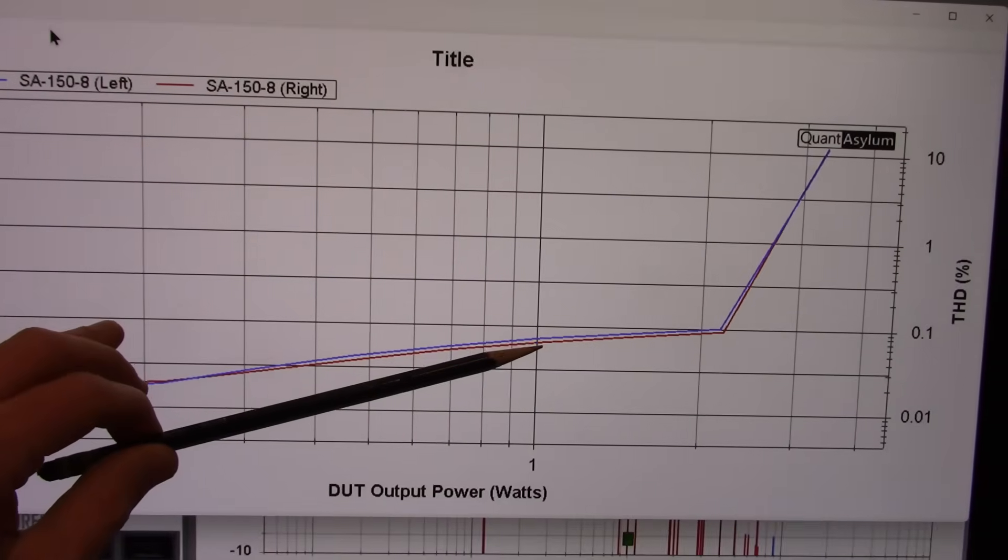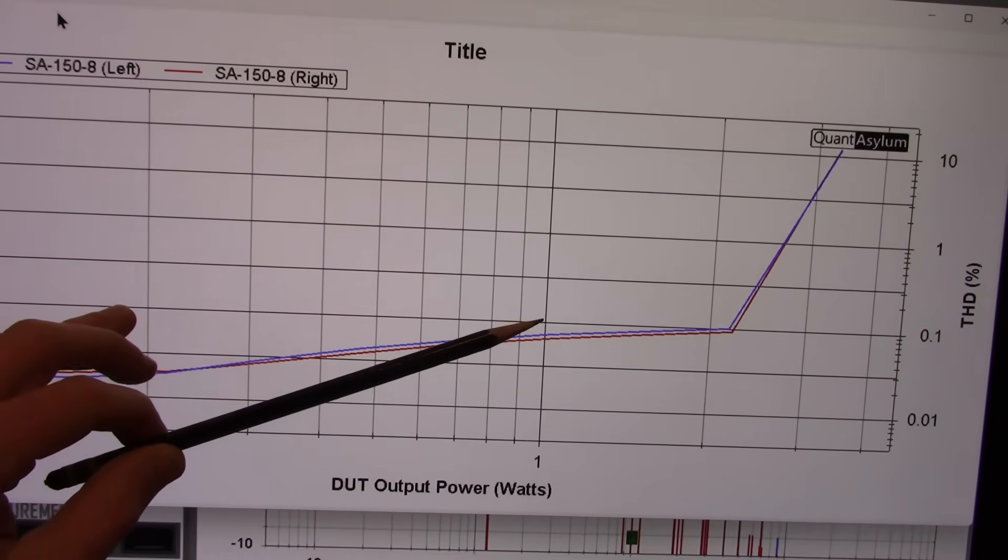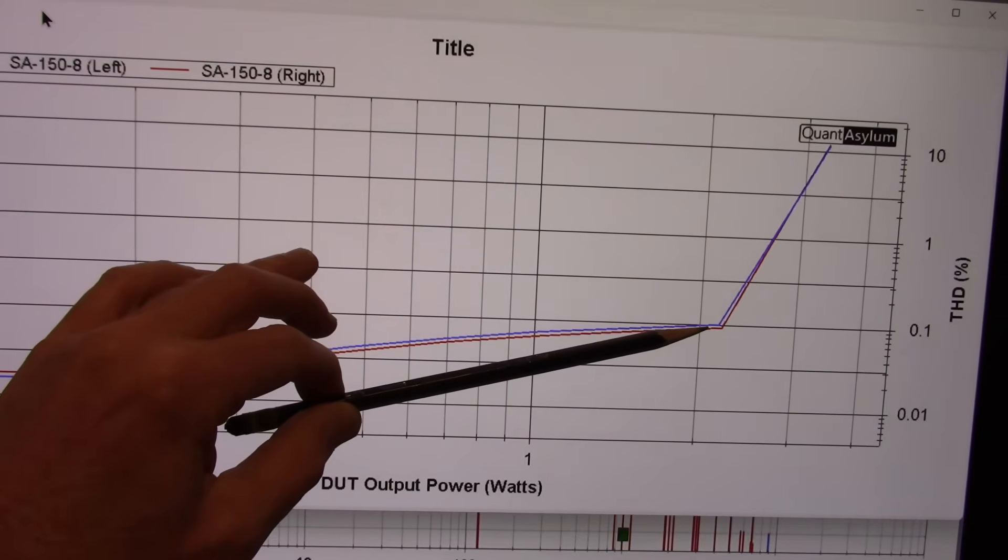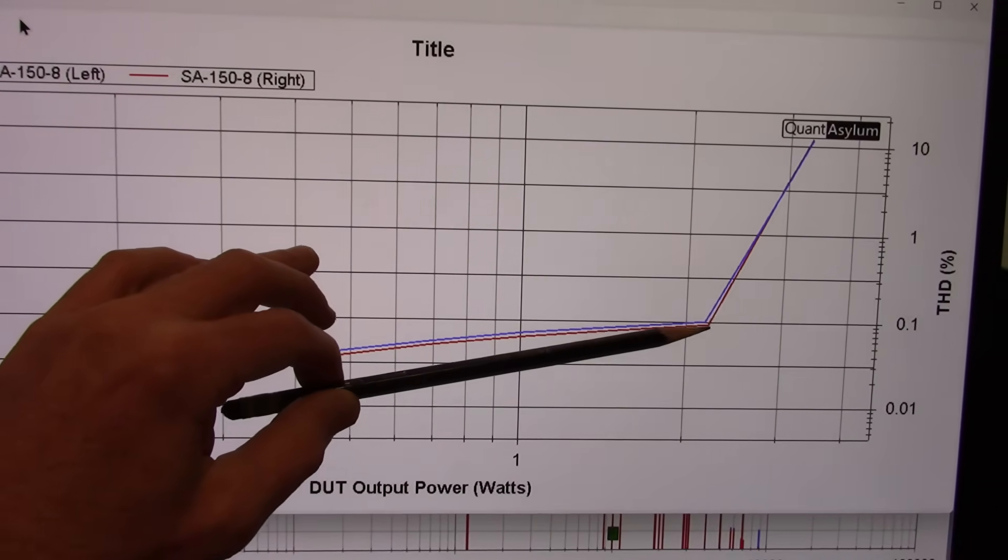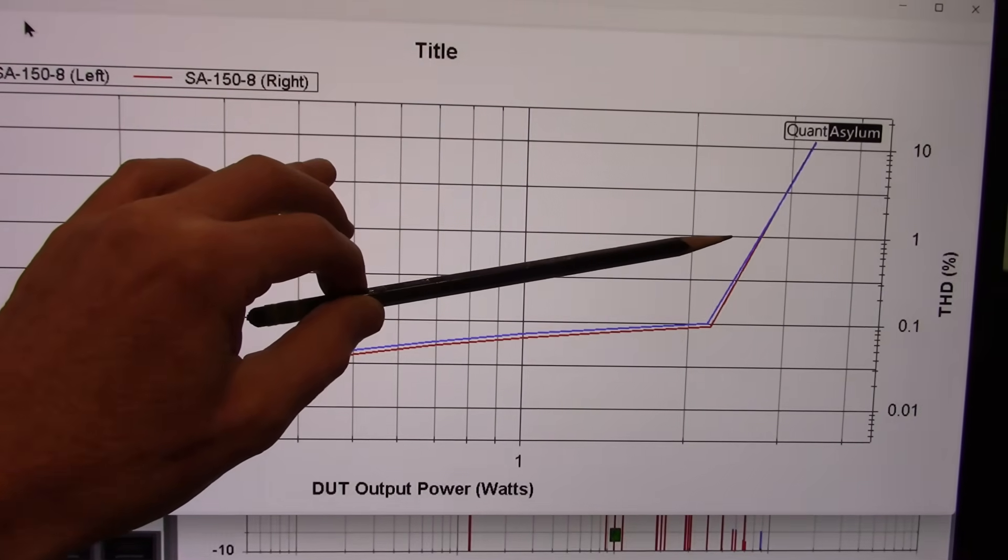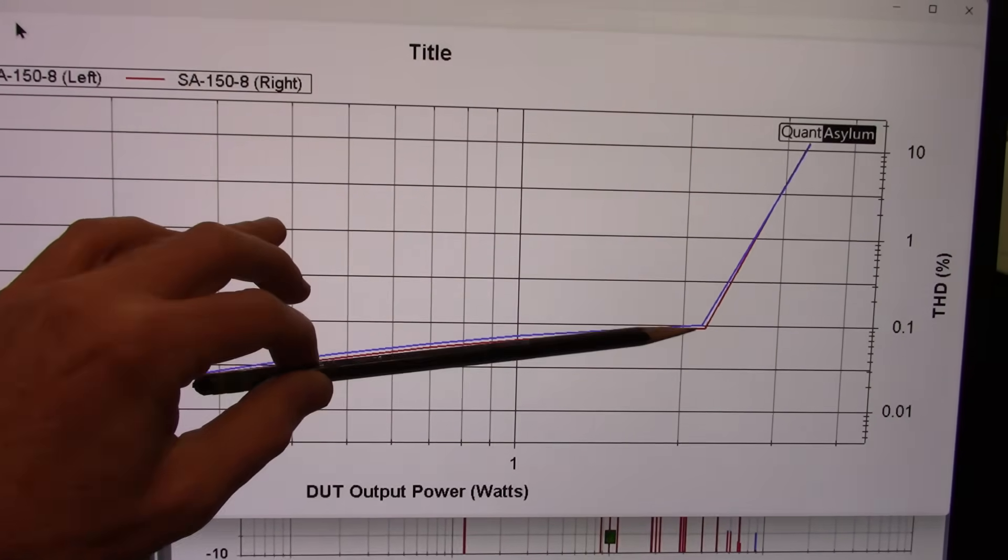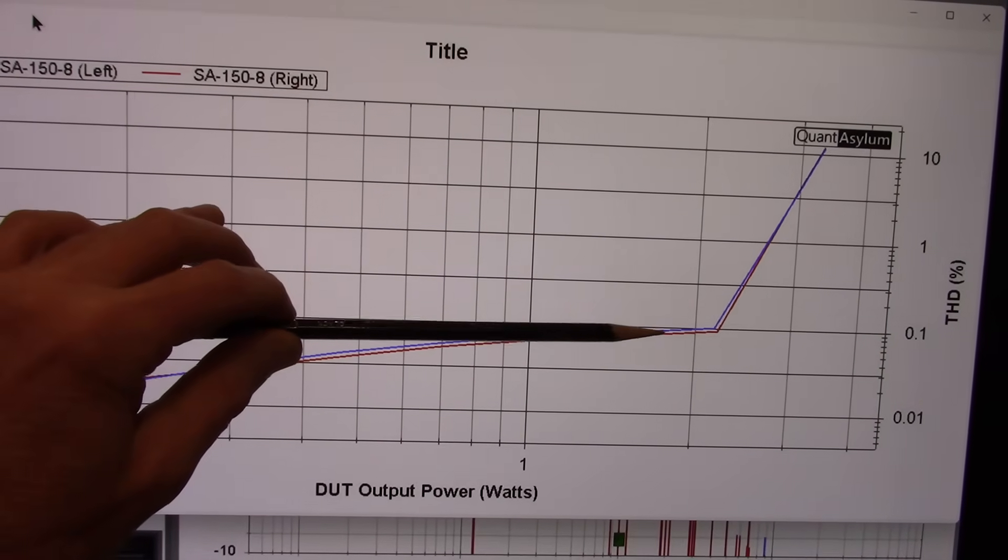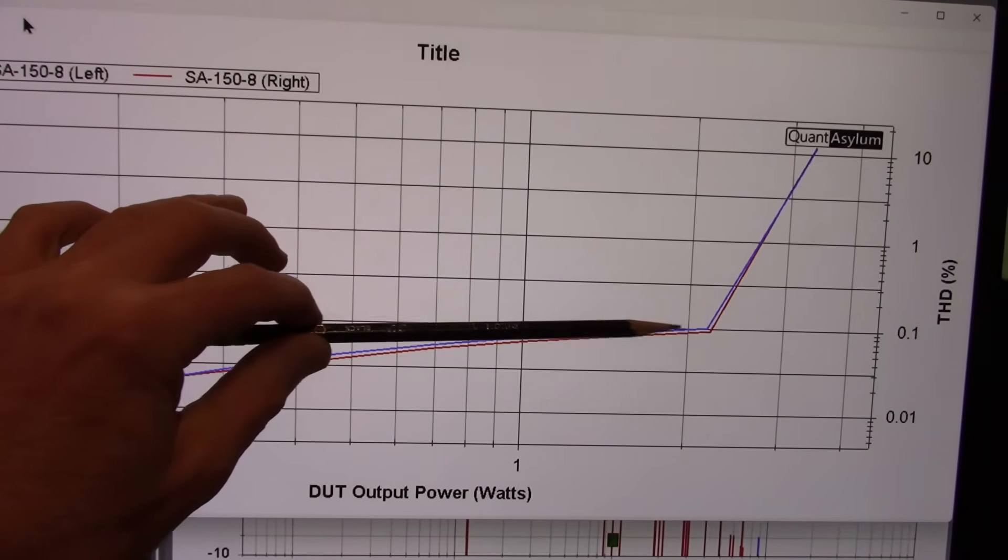At 1 watt, we're getting decently under 0.1%, which is good for this amp. And at 2 watts, we're hitting 0.1%. Again, this is all at 1 kHz. And we get into clipping, and that's about 2.5 watts at 1% distortion. Now, I don't have the manual specifications in front of me, but if it was rated 1.8 watts at 1 kHz, we're doing a little better than that.